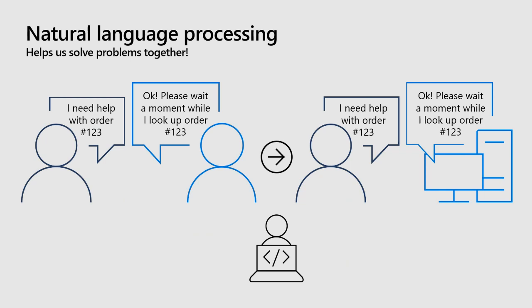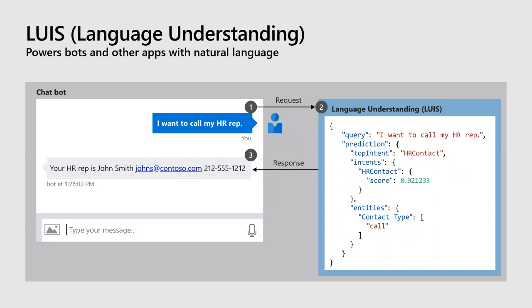The person who created the bot can use that information to look up order 123 and display the order details in the chat window. There's also a service called LUIS — Language Understanding — that helps bots with natural language. In this example, a person asked for an HR rep, and LUIS sees that the intent is to contact someone from HR, so the bot responds with that rep's name, email, and phone number.